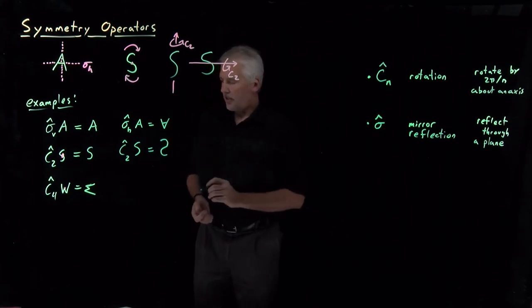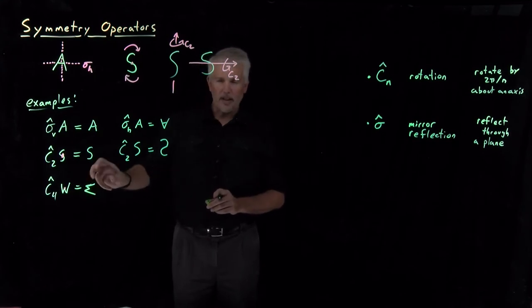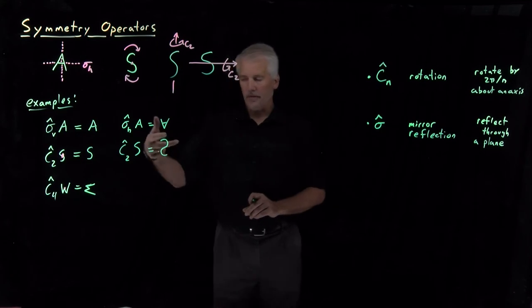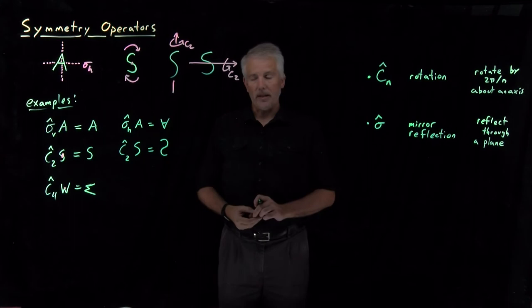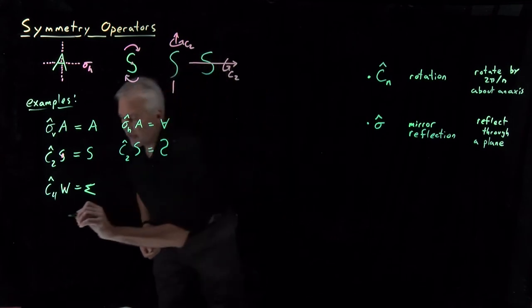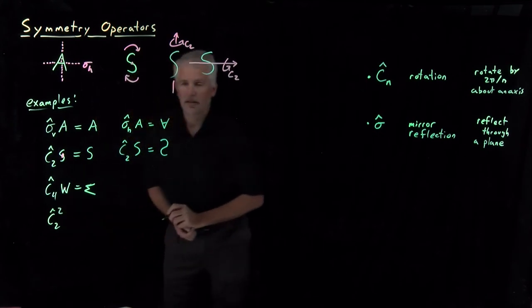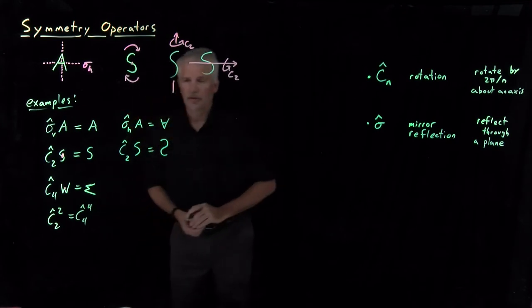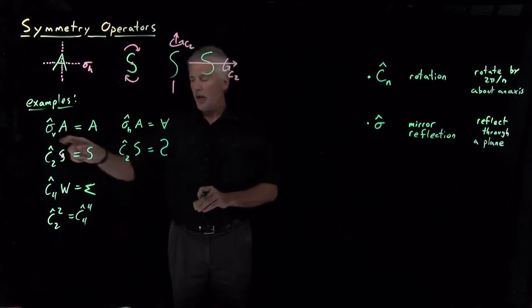If I were to do that C4 rotation again it would be upside down, and again it would return to where it started. Likewise for C2 rotations: rotating by 180 degrees flips it, and rotating by another 180 degrees brings it back to right-side up. So doing a C2 rotation twice, or a C4 rotation four times, brings the object all the way around — the same as doing any reflection operation twice.